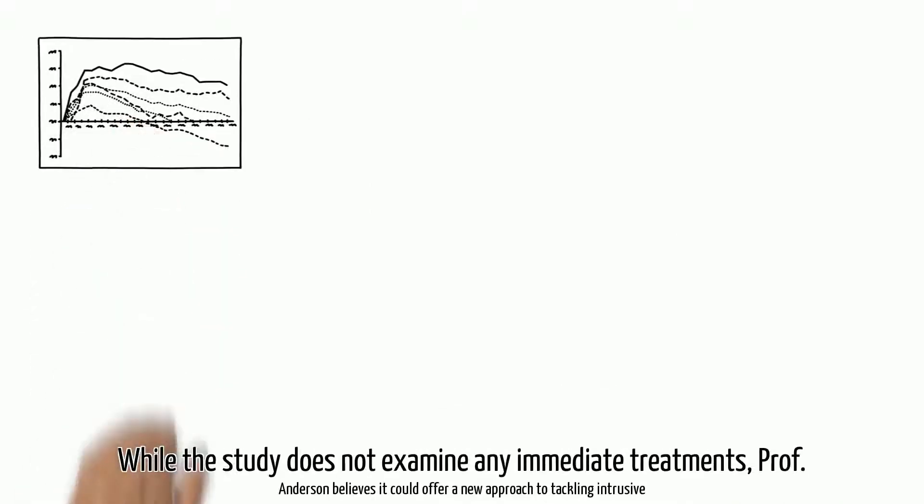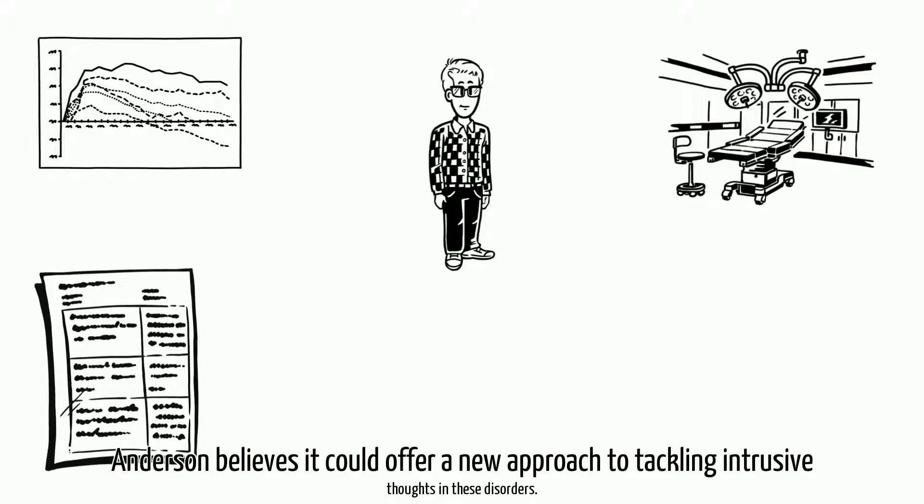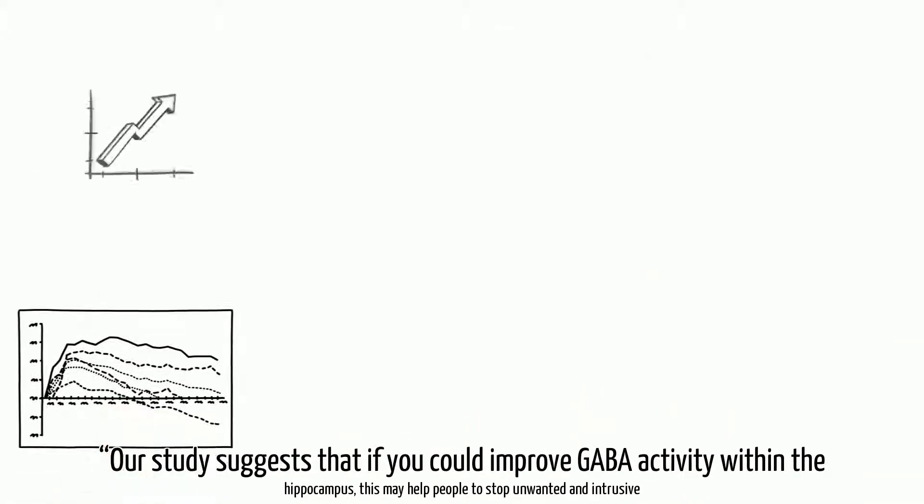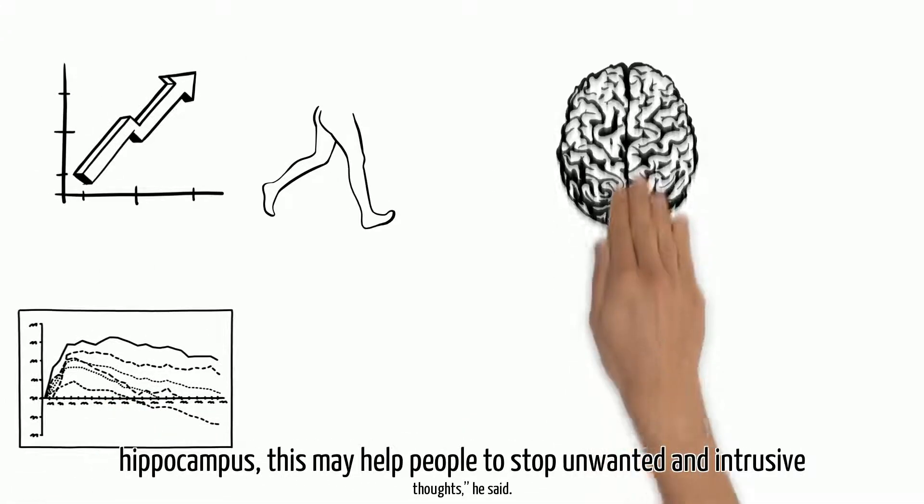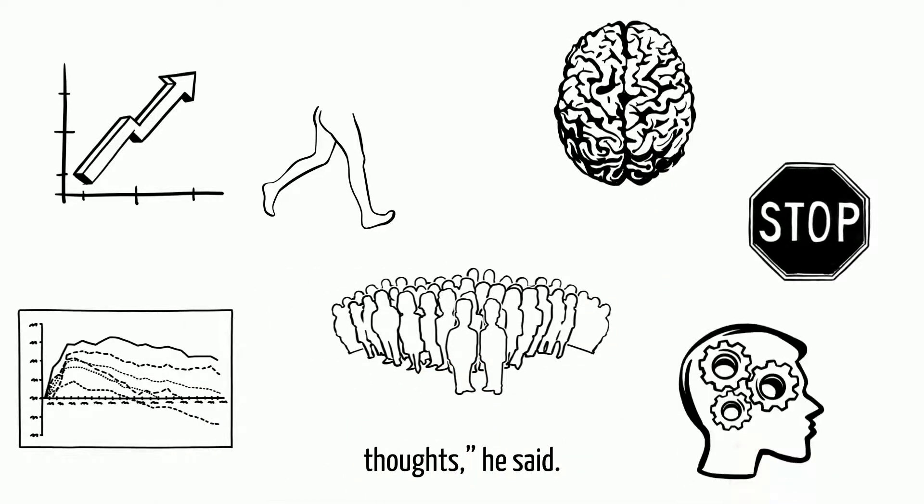While the study does not examine any immediate treatments, Professor Anderson believes it could offer a new approach to tackling intrusive thoughts in these disorders. Our study suggests that if you could improve GABA activity within the hippocampus, this may help people to stop unwanted and intrusive thoughts, he said.